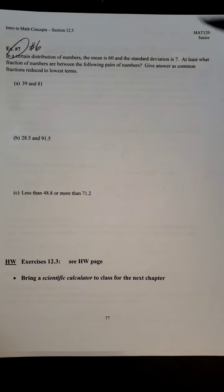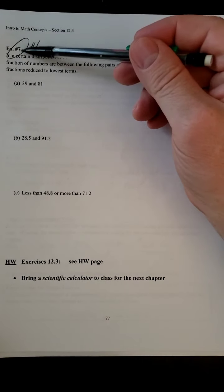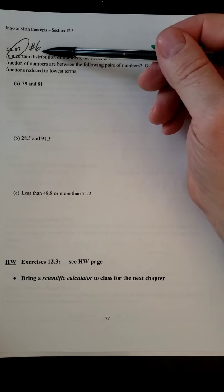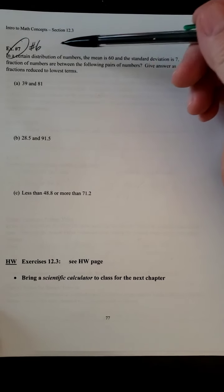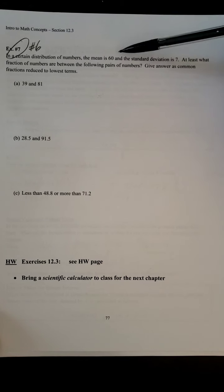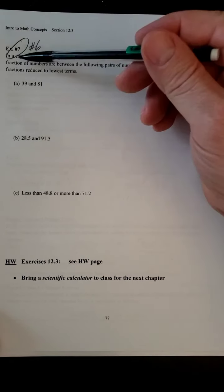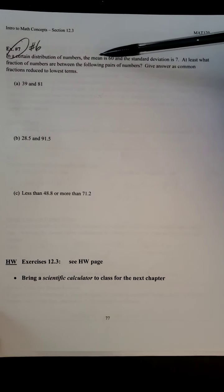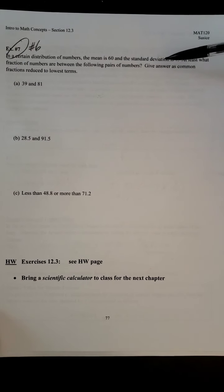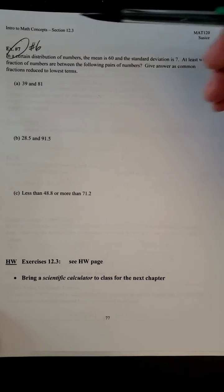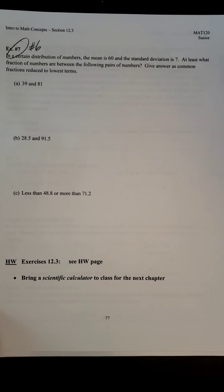Now, the last example of this section is a typo in the book. It's number 7, but it's actually number 6. In a certain distribution of numbers, the mean is 60 and the standard deviation is 7. At least what fraction of numbers are between the following pairs of numbers? Give answers as common fractions reduced to lowest terms.